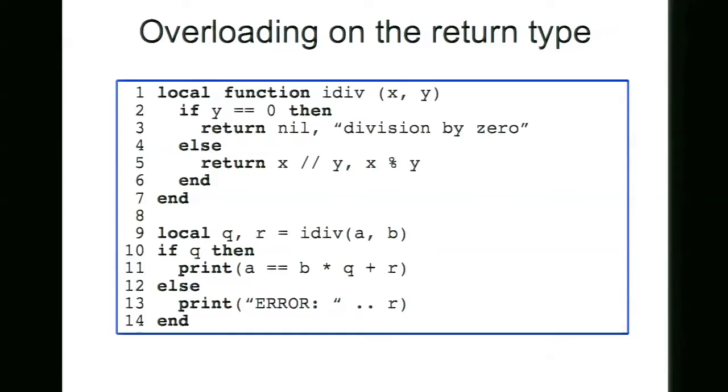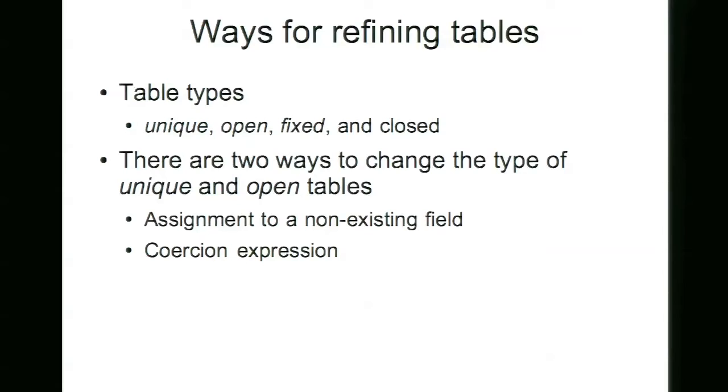So to type check the first idiom, table refinement, we introduce a type called table types. Table types are the way type Lua can describe how Lua tables work. And we have different tags to represent different kinds of tables. We will not enter in details about these tags. But believe me, they are explained in the paper. Basically, we have unique and open tables that are more flexible table types to control the incremental evolution of table types. We have also fixed table types that are the most rigid ones. And closed table types are similar to records.